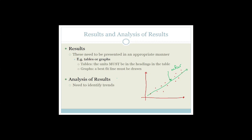With analysis, you need to identify the trends. For example, if this is time and this is mass in kilograms, your trend would be that as the time increases, the mass of the object increases — and it is directly proportional because of the straight line graph.